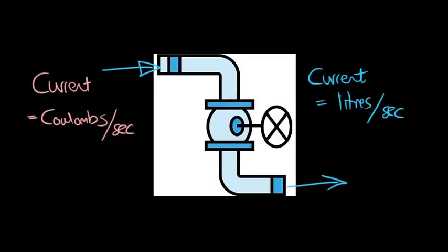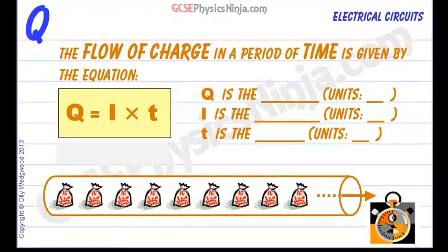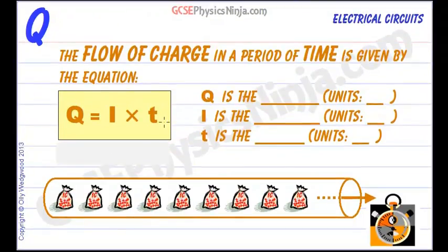And this is summed up with the equation which I like to call QUIT: Q equals IT. Now it's not in the form which is current equals, so I is not the subject of this formula, but it's easier to remember if you just use QUIT, Q equals I times T.